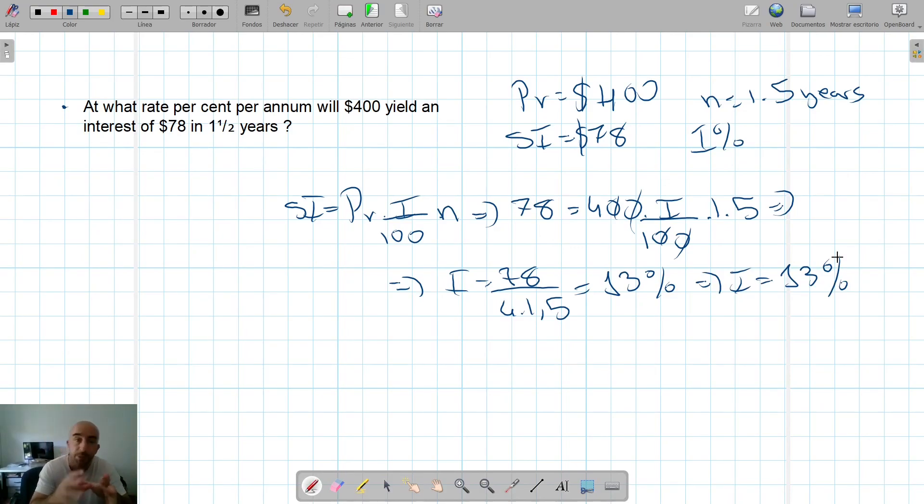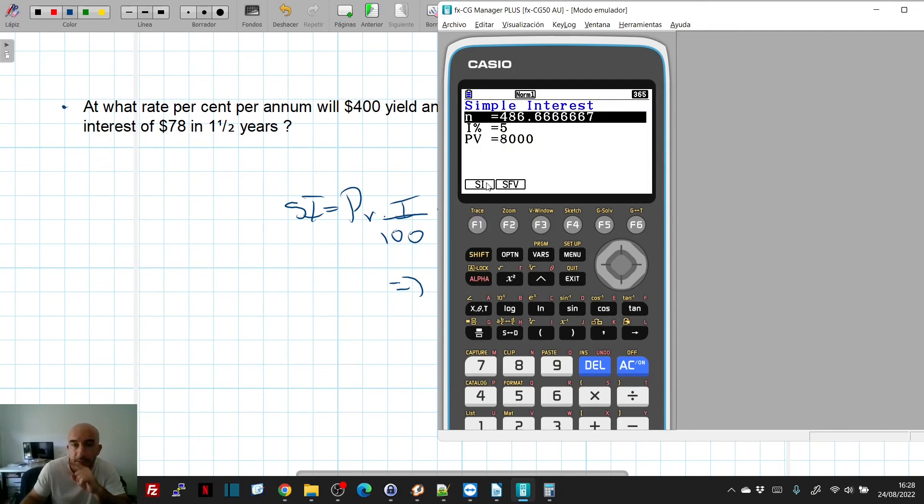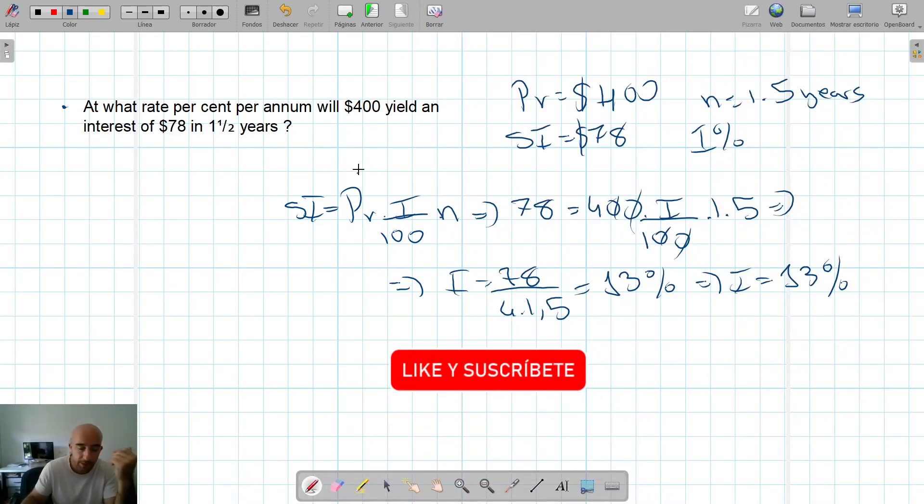As a conclusion, in the Casio calculator, in the simple interest option, we can only obtain the simple interest as an amount and the final value by introducing N as days in a year, as a total number of days, I in percentage, and principal value as the initial value. Any other exercise, and you will get exercises where you will be asked for other things, you need to do it with the formula. So, in my opinion, it's better just to learn the formula and learn how to do these types of exercises without the calculator.